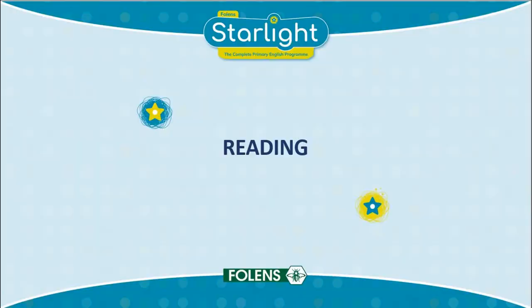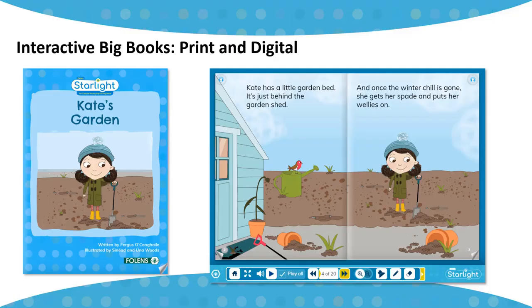Now let's take a look at the reading component of the programme. Along with the oral language poster, each fortnightly unit in Starlight has a print and digital big book. The purpose of the big books is to provide a shared reading experience between teacher and pupils and to enable the teaching of literacy skills. Each big book is based on the same theme and genre as the poster.